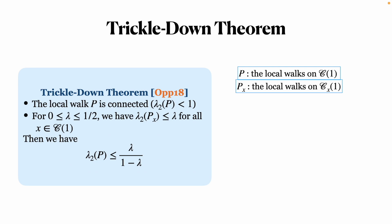The trickle down theorem plays an important role in our analysis of local walks. It allows us to understand the relationship between P and Px, which are the local walks before and after fixing an element x. However, it provides sufficient bounds for coloring only when the number of colors is greater than the order of the graph.